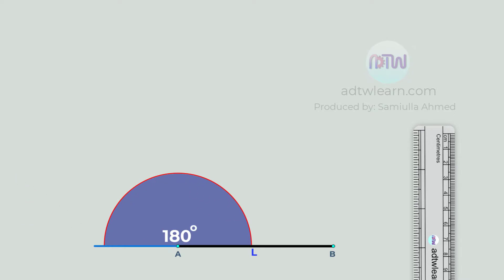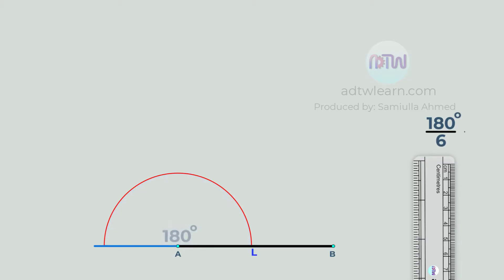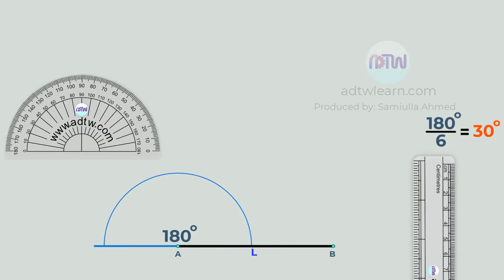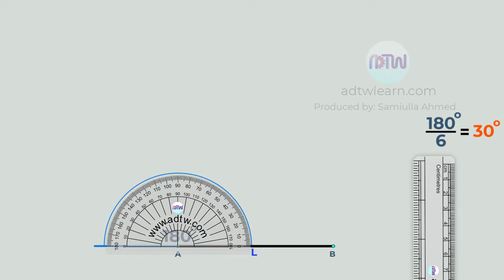Since we want to draw a hexagon, we need to divide this angle into six parts. Therefore, 180 divided by six will be equal to 30 degrees. Take a protractor and place it here such that its center coincides with point A and mark 30 degrees.